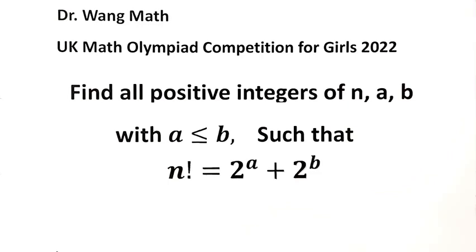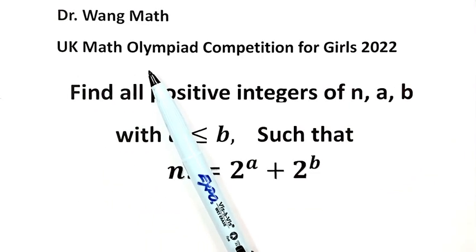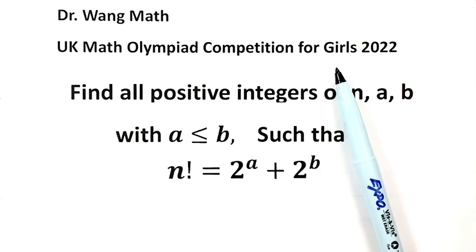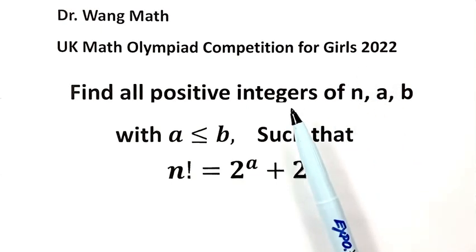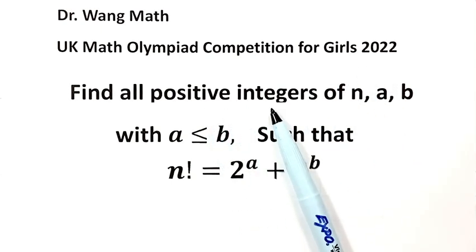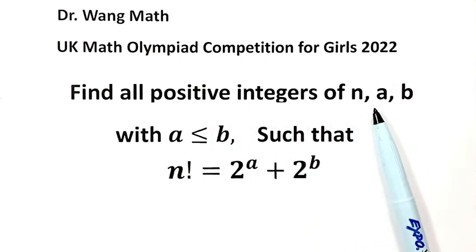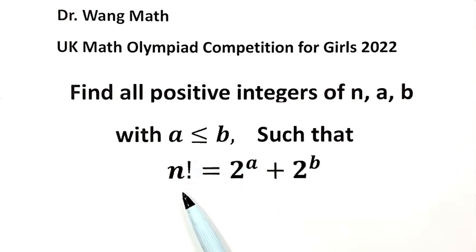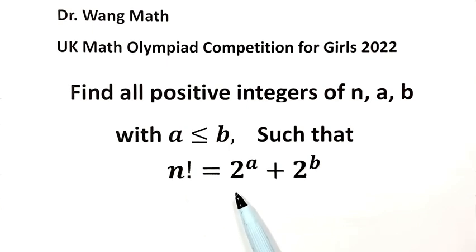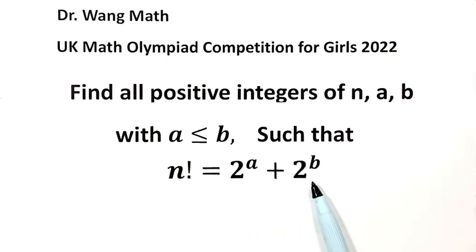In this video, we solve a question from the UK Math Olympiad Competitions for Girls 2022. Find all positive integers n, a, b with a ≤ b such that n factorial equals 2 to the power a plus 2 to the power b.